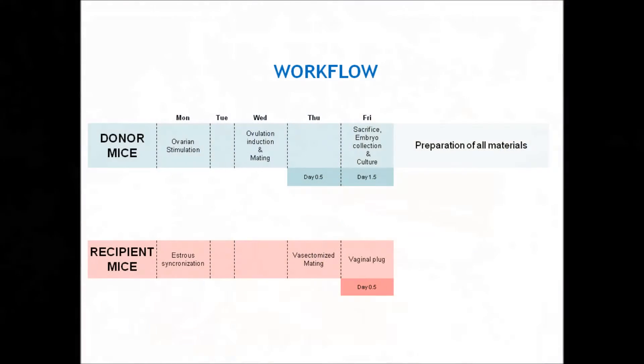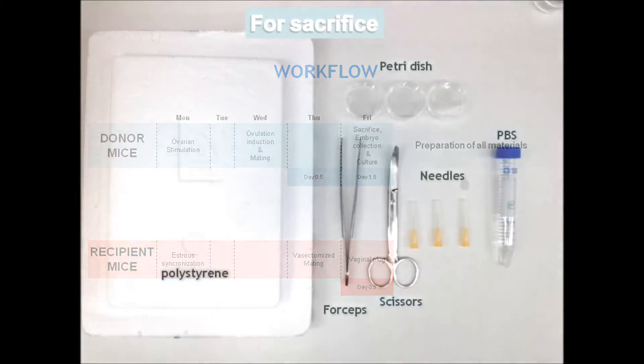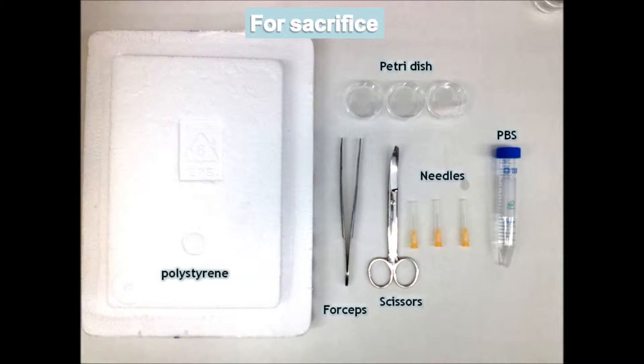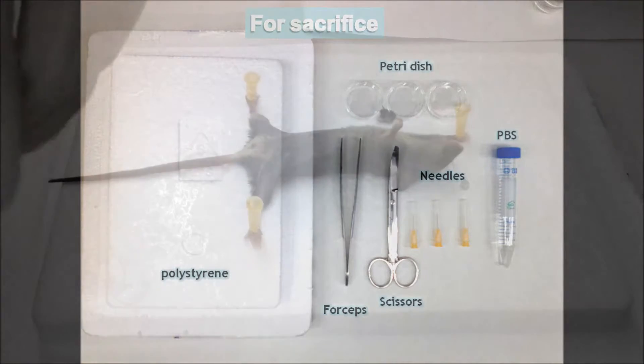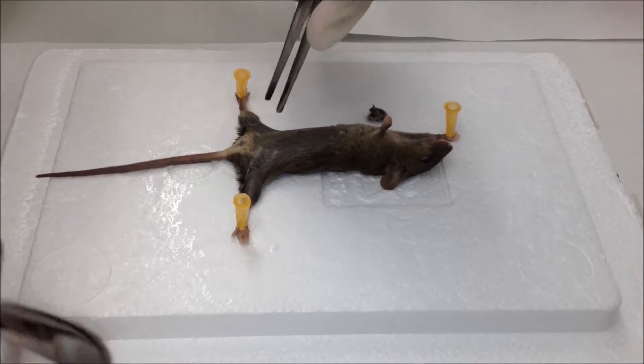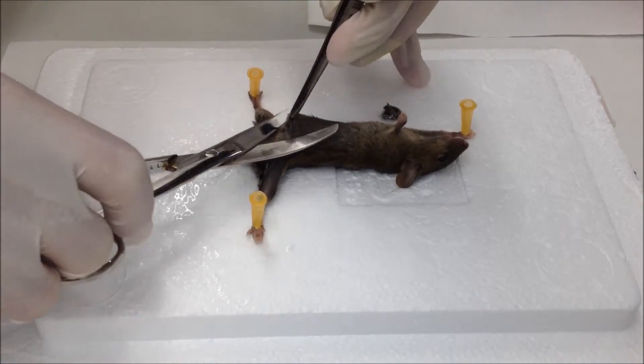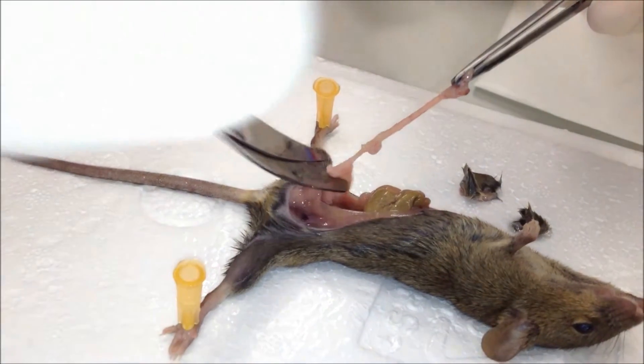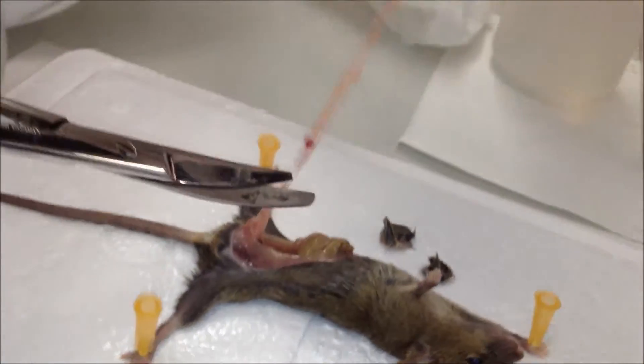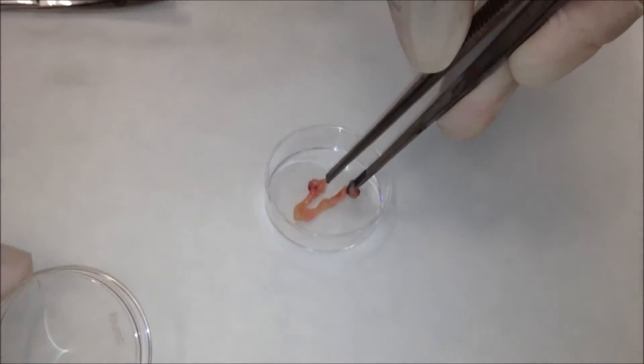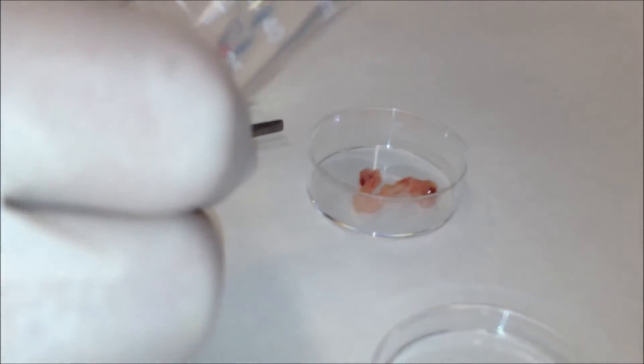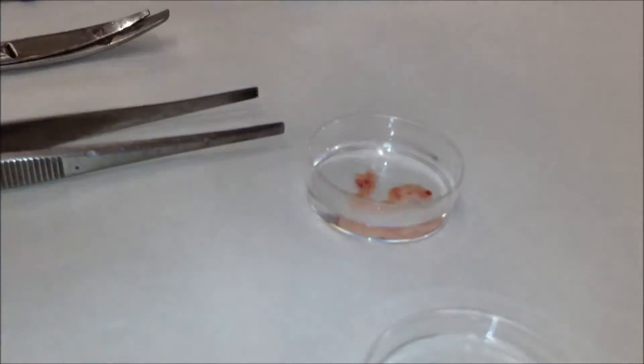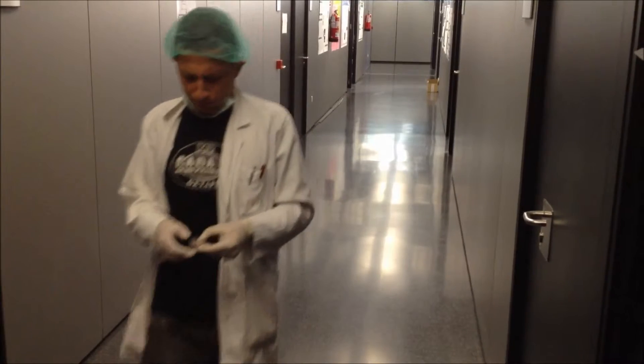The donor mice will be sacrificed on the same day. For sacrifice, we need a piece of polystyrene, forceps, scissors, a petri dish, needles and PBS. After cervical dislocation, the mice are placed face-up. Make an abdominal cut to expose the organs using the scissors and forceps. We will look for the uterus and together with the ovaries, they will be dissected and placed in PBS ready to flush the embryos out.